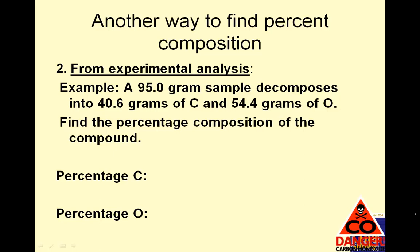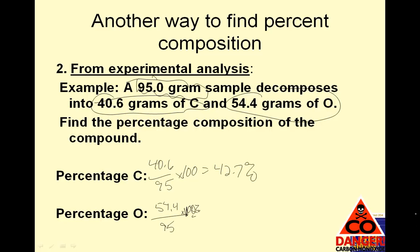Another way to find percent composition is from experimental analysis. 95 gram sample decomposes into 40.6 grams of carbon, 54.4 grams of oxygen. Find the percent composition of each compound. So carbon is 40.6 over 95 times 100. And oxygen is 54.4 divided by 95 times 100. So 40.6 divided by 95 times 100 is 42.7%. And 54.4 divided by 95 times 100 is 57.3%. And just eyeball it. Those two added together equal 100.